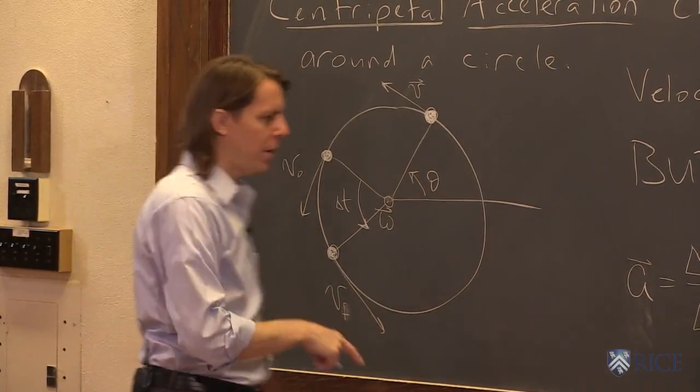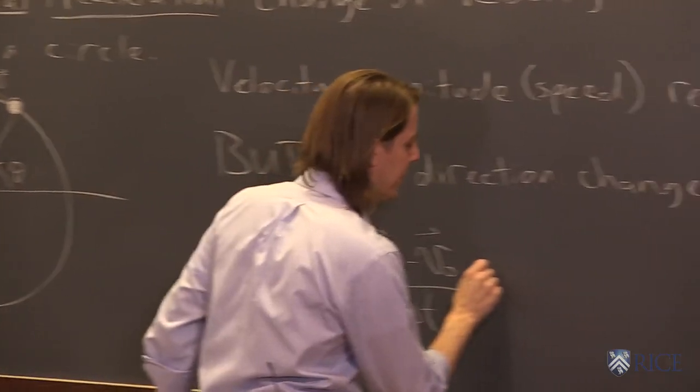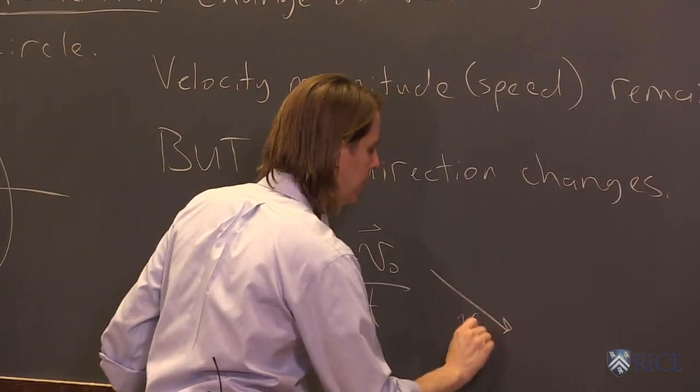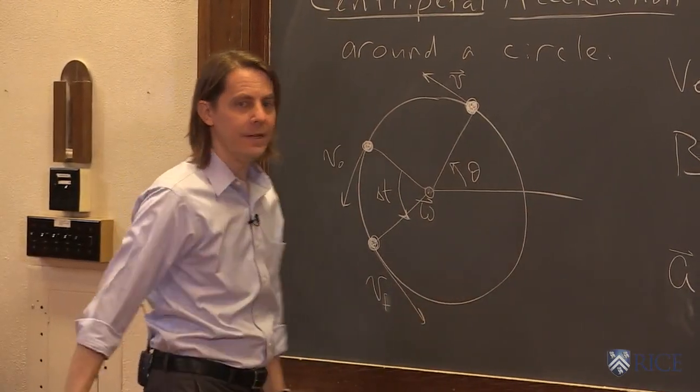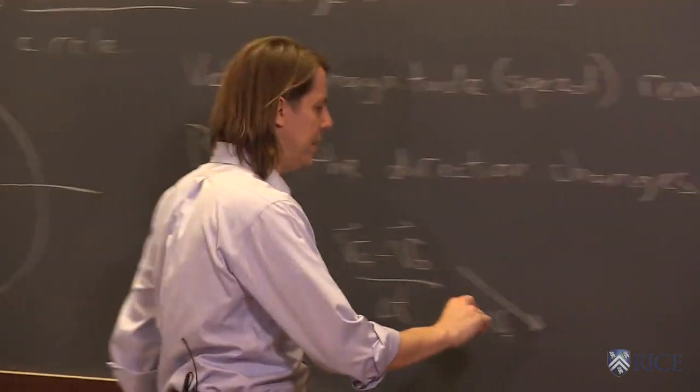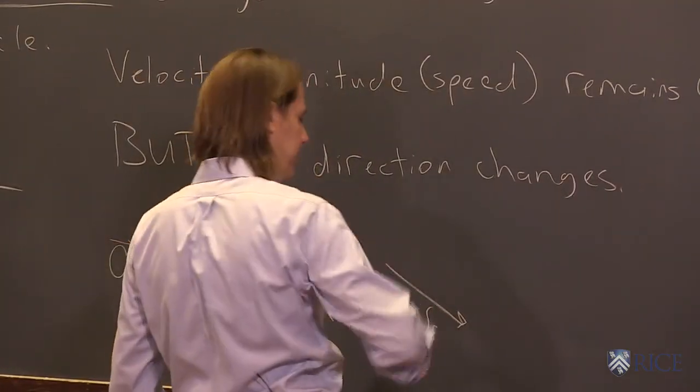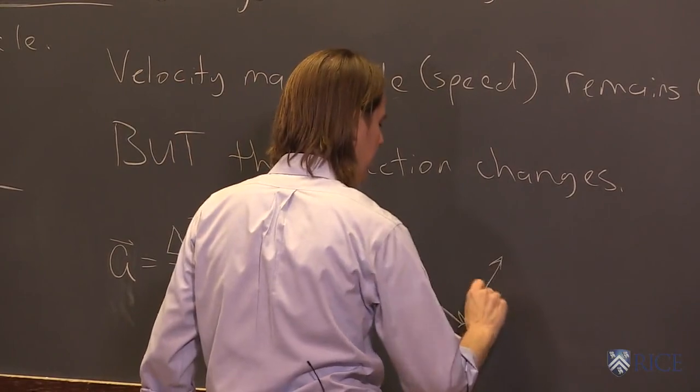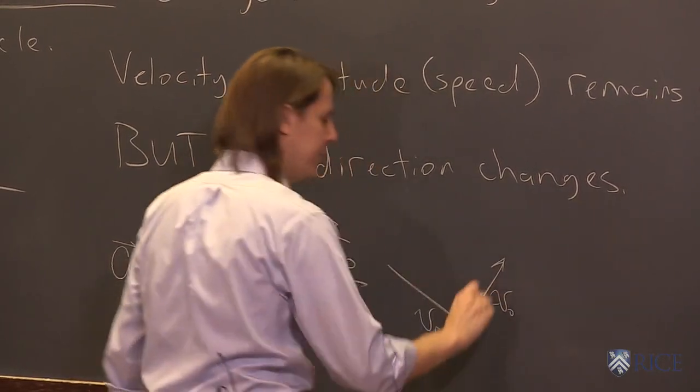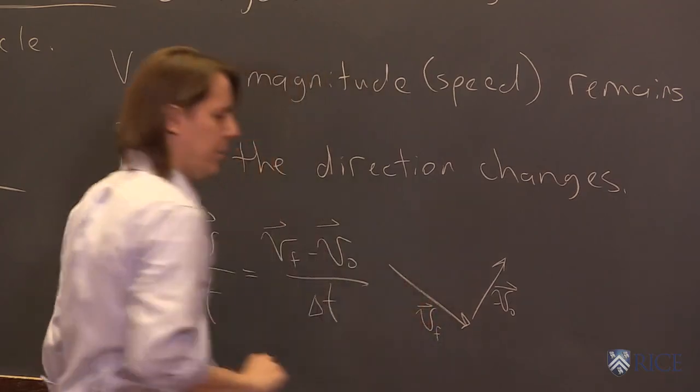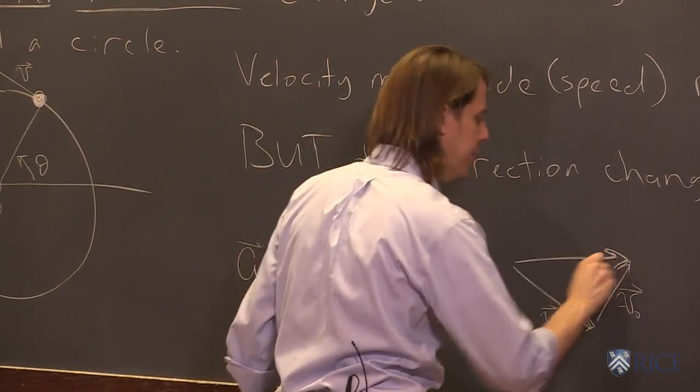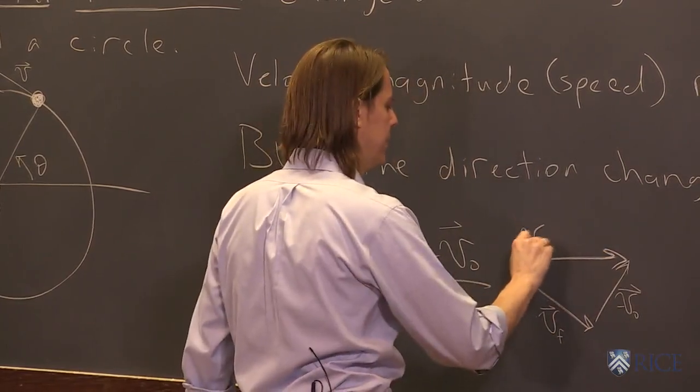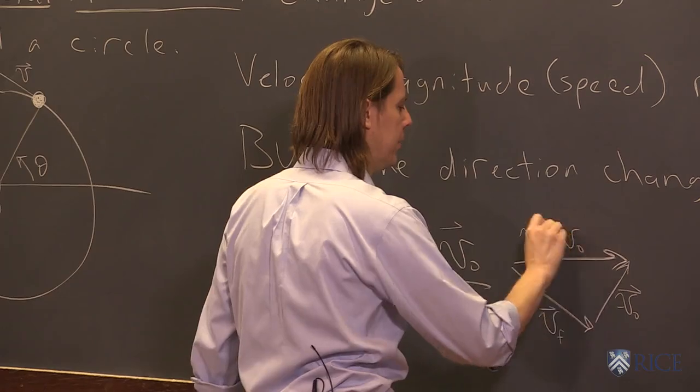So first, I'll just draw v-final again. It looks kind of like that. And then I will add head to tail the negative version of v-naught, the initial velocity. So it was like that, so it goes up like that. That's minus v-naught. So when you add those head to tail, you get a vector that looks like that, v-final minus v-naught.